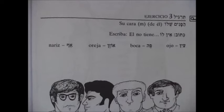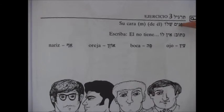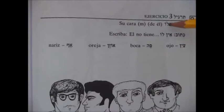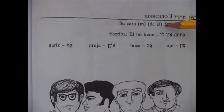En nuestro manual vemos que habla de su cara masculina, de él. Vamos a ver en hebreo: Panim es la palabra en hebreo para cara. A, el artículo: el, la, los, las. Apanim Shelo — la cara de él. Shelo, de él. Shela, de ella.